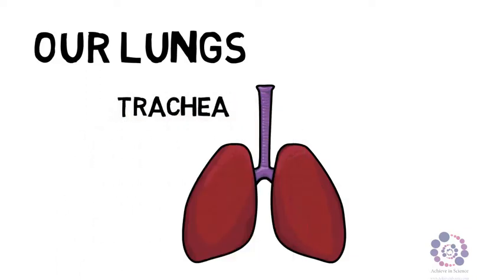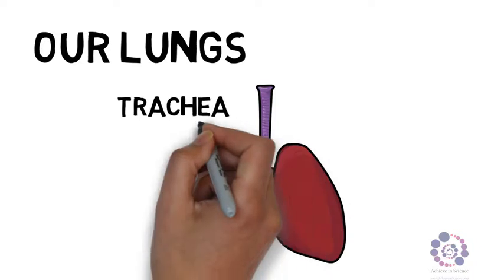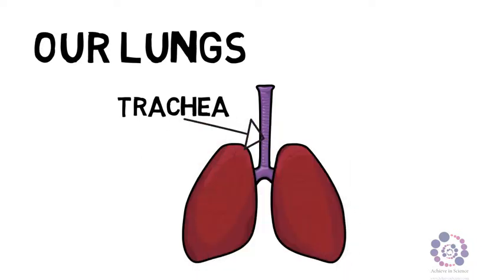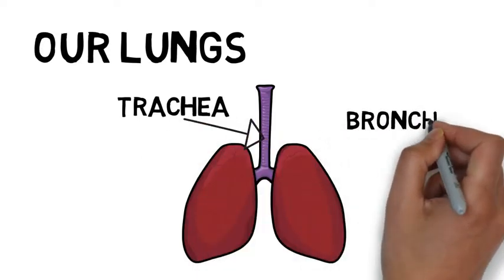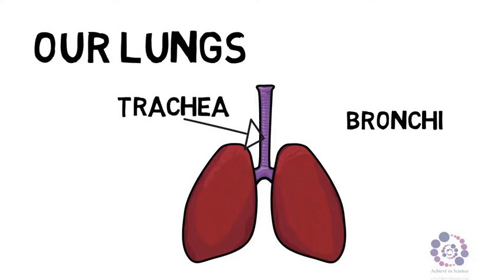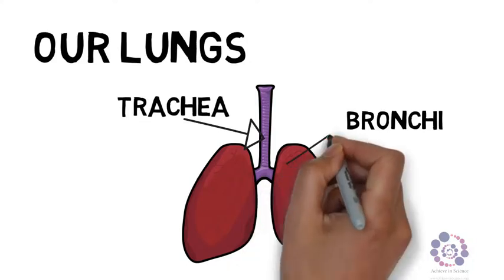The trachea then divides into two branches to supply our left and our right lung. These two branches are called bronchi.